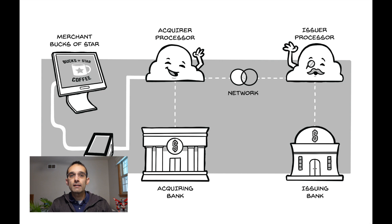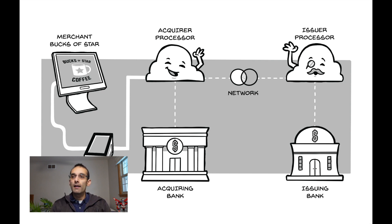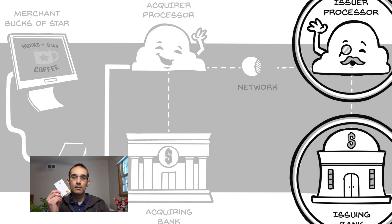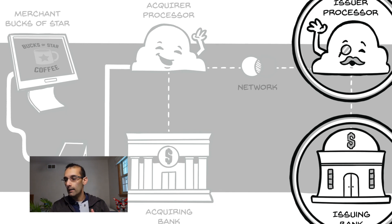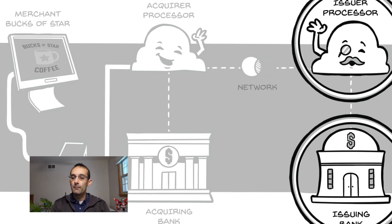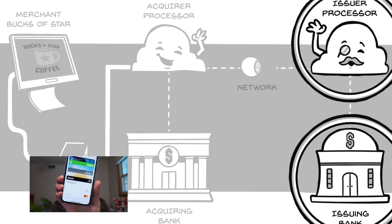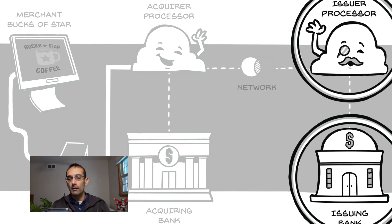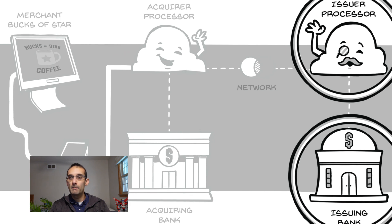For any card-based payment to happen, you first need a person that wants to make a payment — so this would be you — and you need a way to pay. Here's a debit card, a physical debit card, but it could also be done as a virtual card, or as you can see here, it's in my Apple Pay wallet that I can use to tap and pay.